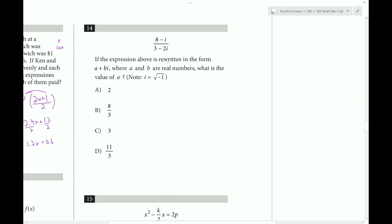And the expression above is rewritten in the form a plus bi. What is the value of a? So we notice here the only issue is that i is like a square root. And you're not allowed to have square roots in the denominator. So we need to rationalize and the best way to do that is to use a conjugate. So we do 3 plus 2i on top and bottom here. And we're going to have to FOIL.